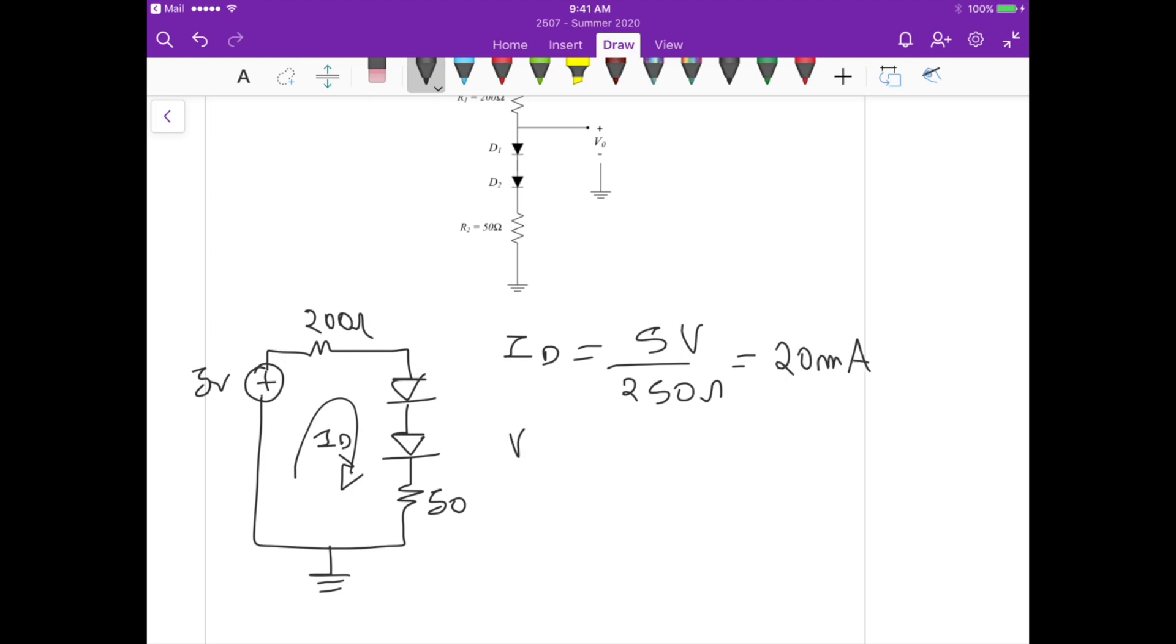Now we can calculate the small signal resistance as the thermal voltage Vt divided by the DC current that's flowing through the diode id. So this is 25 millivolts divided by 20 milliamperes and that's actually 1.25 ohms.